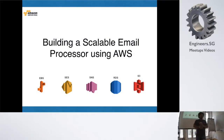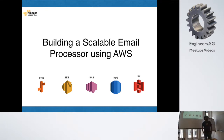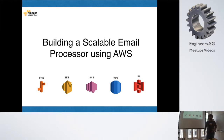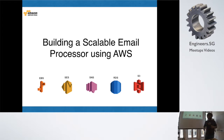Welcome to James' talk on IPv6. James isn't here. So this is the talk that I delivered last night at the AWS user group meeting. It's on how to build a scalable email processor using AWS.